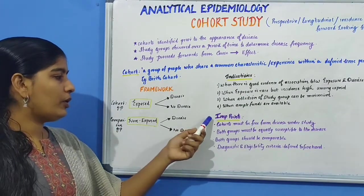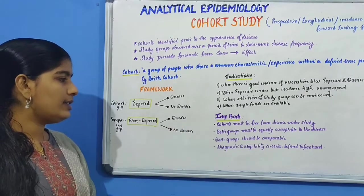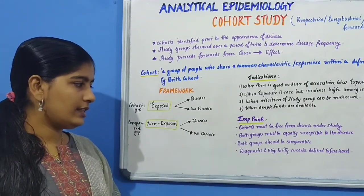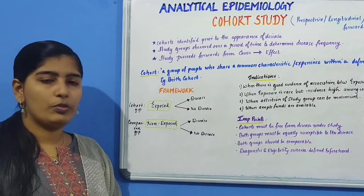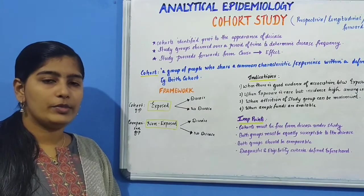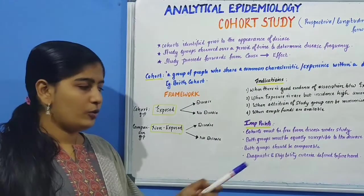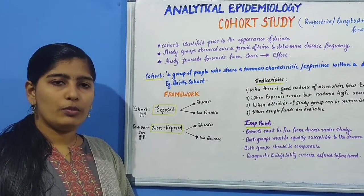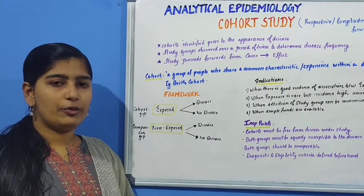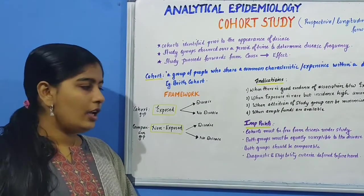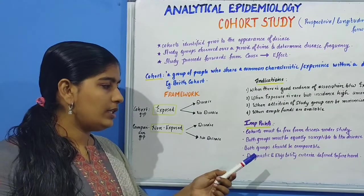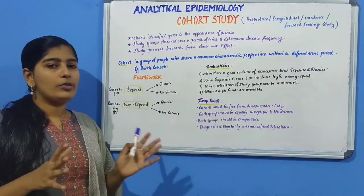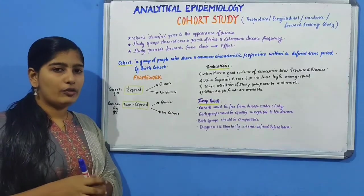Moving on to important points regarding this study: cohorts must be free from the disease at the start, and both groups should be equally susceptible to the disease under study. Also, both groups should be comparable with respect to all possible variables that might influence the study, and diagnostic and eligibility criteria should be defined beforehand.